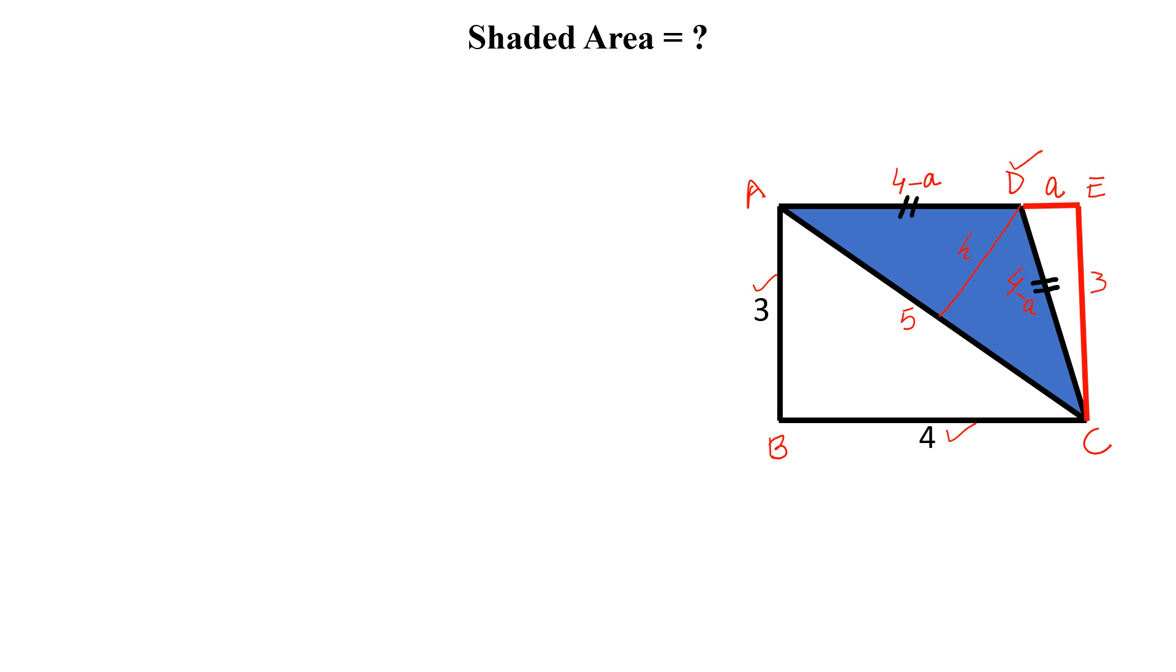If we look at the triangle, triangle DEC, so from triangle DEC we can write, A square plus 3 square is equal to 4 minus A whole square. Now if we simplify this,